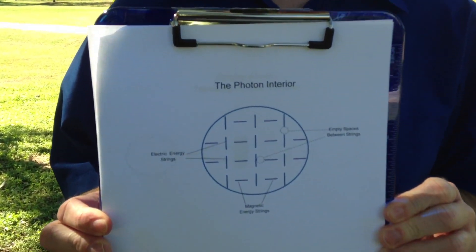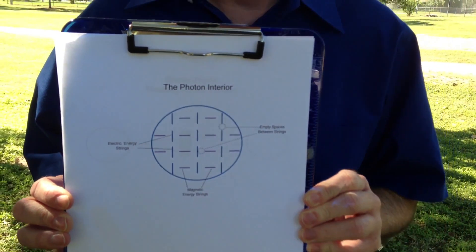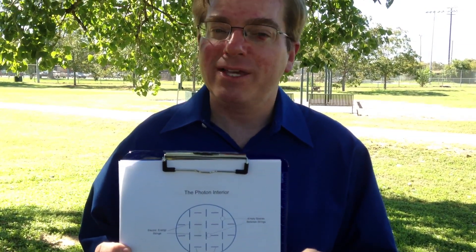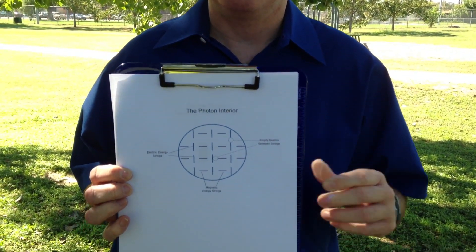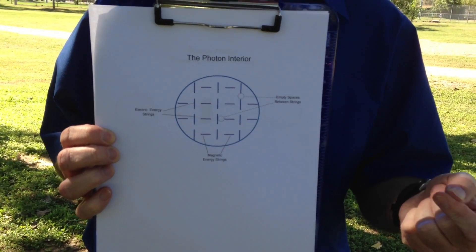I've got a picture to demonstrate. This is a diagram of the interior of a photon. You will see that it contains a series of energy strings — there are magnetic energy strings and electrical energy strings, and all of these strings are contained within the sphere that is the photon. You will also notice that there are spaces between the strings. This is important because the strings are not fixed in place; the strings actually migrate in different directions, and the exact nature of that migration is one of the factors which contributes to the phenomena that we observe in electromagnetic radiation.